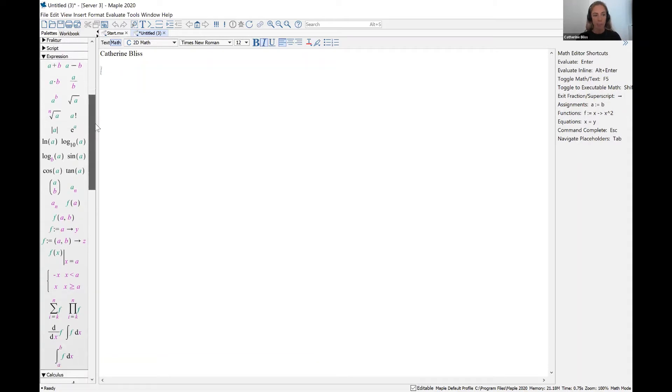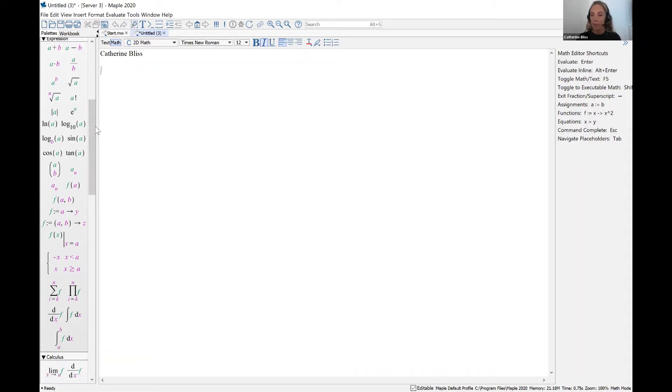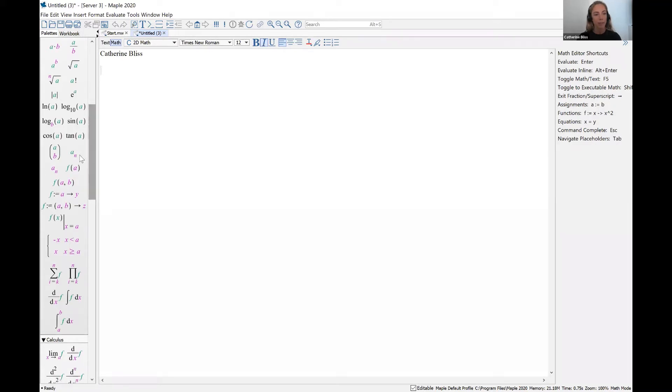To set up a function in Maple, and this is an executable function like f of x, I'm going to go over to the expression palette, click on the notation for defining a function. I'm going to call this function f. My independent variable is going to be x, and the function will be sine x.